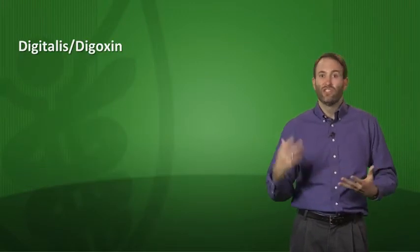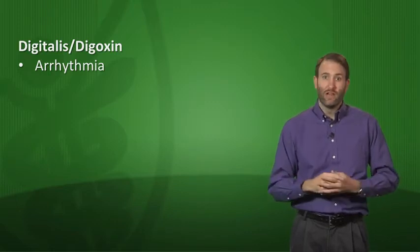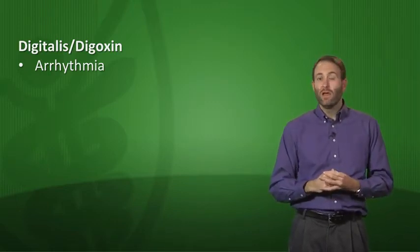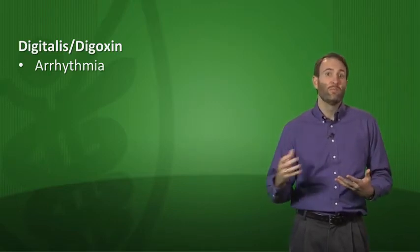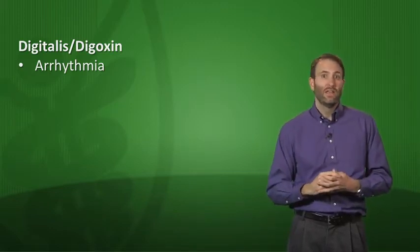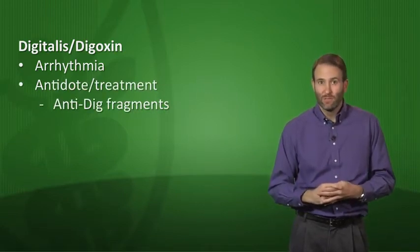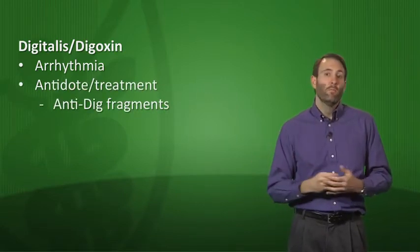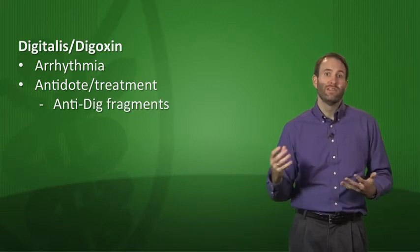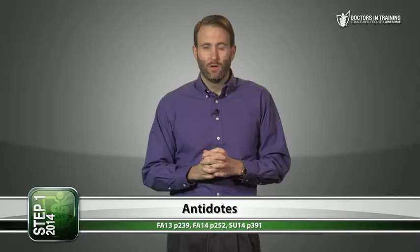Next we're talking about digitalis or digoxin. Arrhythmia is the most dangerous manifestation of digitalis overdose and as with any arrhythmia you definitely want to make sure that the potassium and magnesium are optimized. If it's a severe overdose then you give what's called anti-dig fragments, but you really won't see this done very often. Most of the time supportive care is all that is needed. Things like atropine again can be used for significant bradycardia.